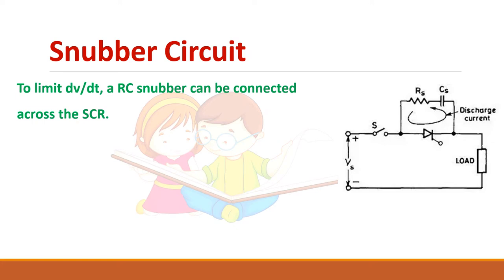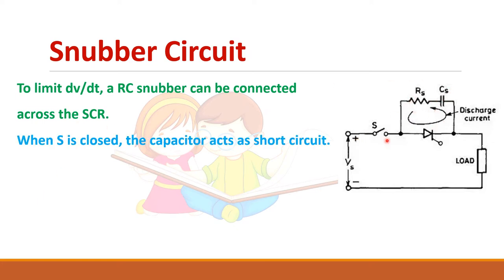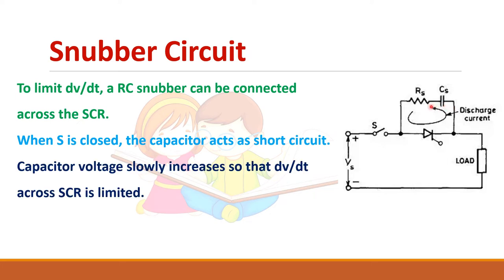To limit the dV/dt, an RC snubber circuit can be used. When the switch is closed, current will start to flow through the capacitor, so the capacitor gets charged slowly. Since the capacitor is connected in parallel to the SCR, the voltage across the capacitor is the same as the voltage across the SCR, so the voltage across the SCR increases slowly.